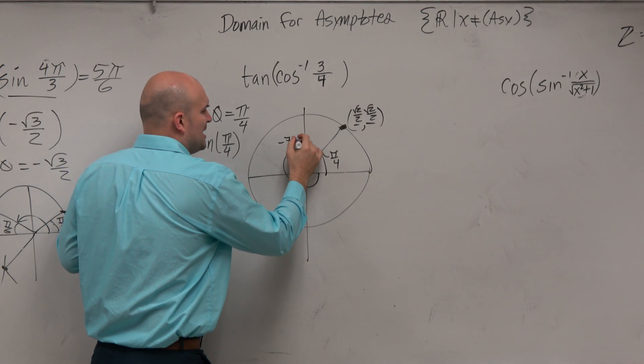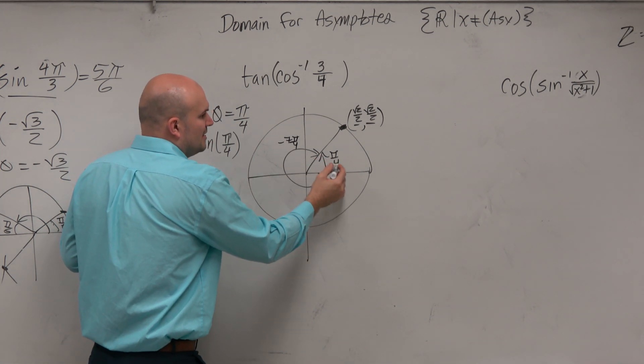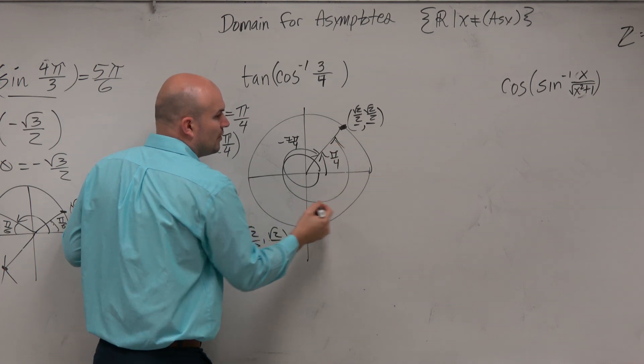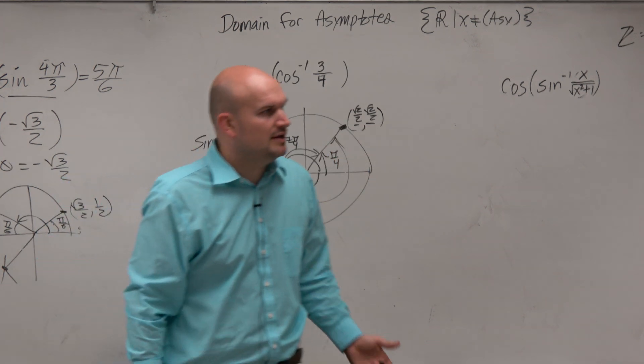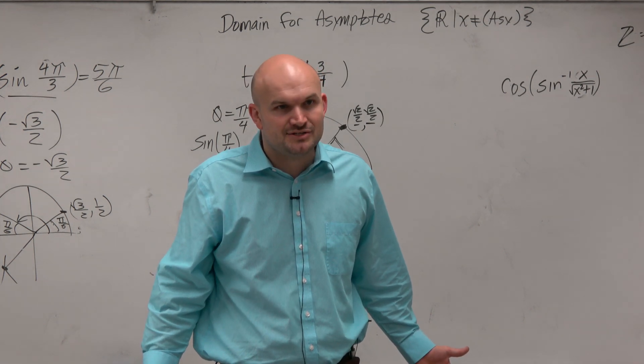But what about negative 7 pi over 4? You say, okay, yeah, you're right there. And then I say, well, what about all these other coterminal angles? What about 9 pi over 4? Yeah, that one works too. What about 17 pi over 4? Oh crap, there's infinitely many answers.